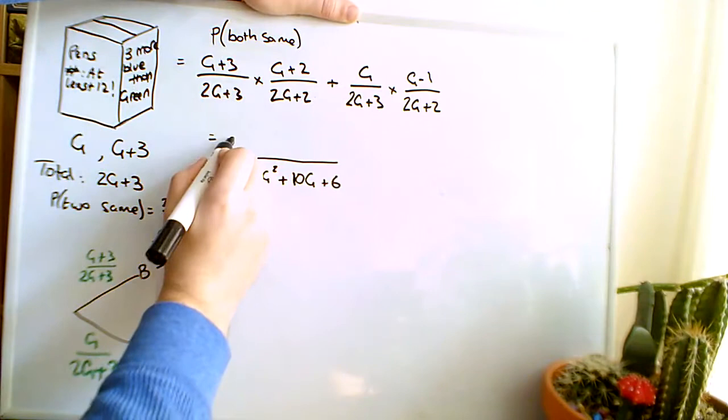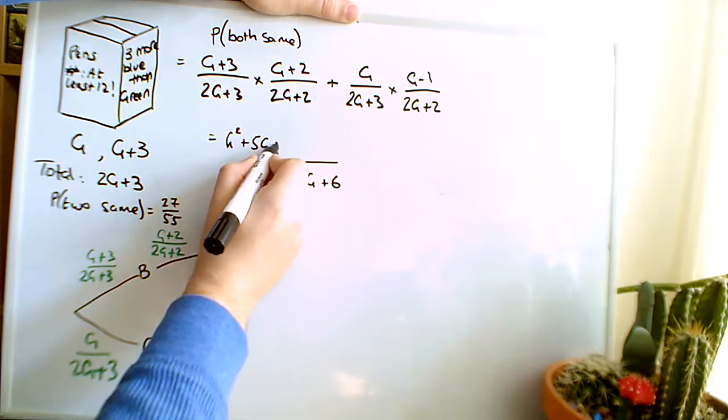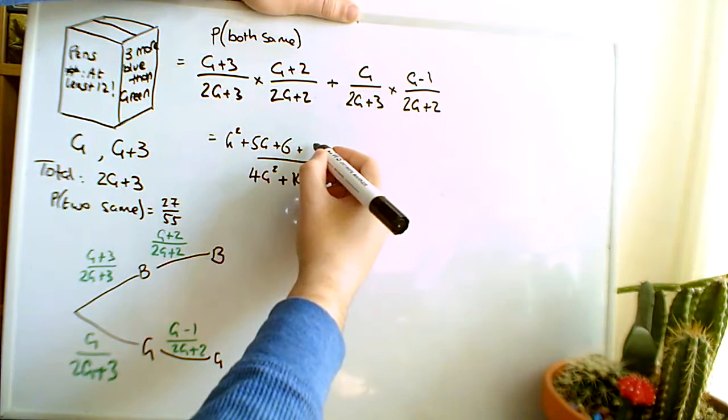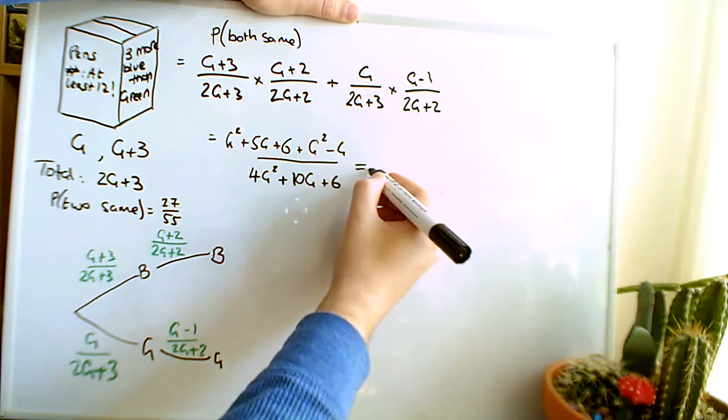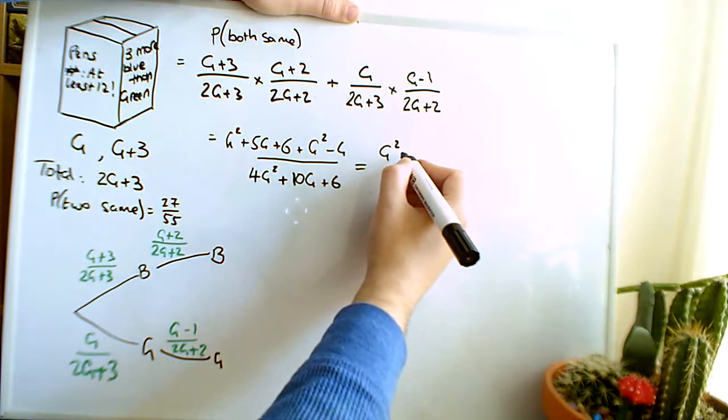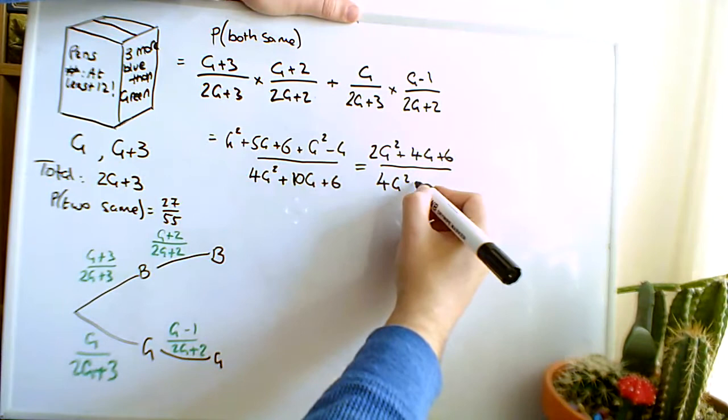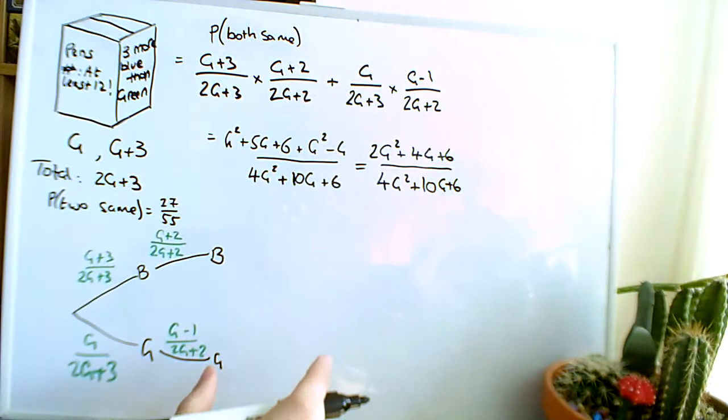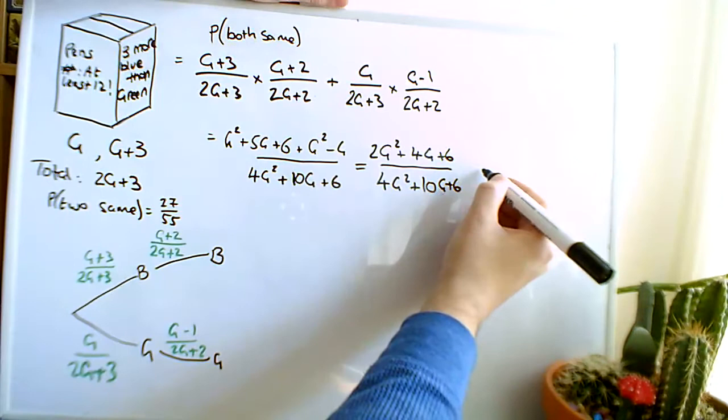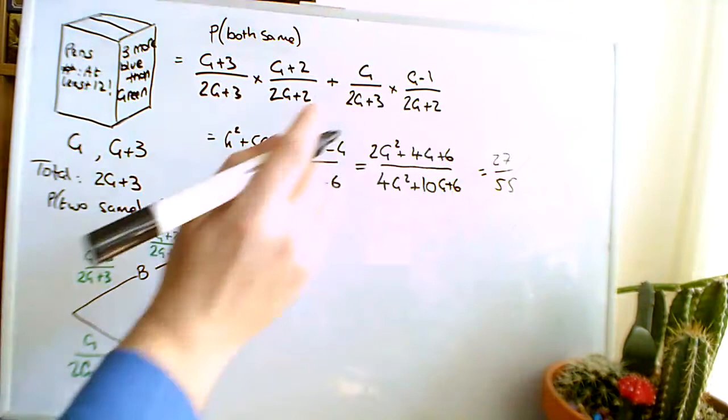And the numerator is going to be the product of these two things plus the product of these two things, so we're going to have G squared plus 5G plus 6, and I'm also going to add G squared minus G, and that becomes 2G squared plus 4G plus 6, all over 4G squared plus 10G plus 6. And we also know that the probability that the two are the same is 27 over 55.